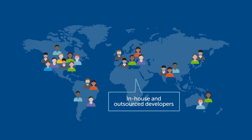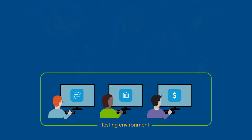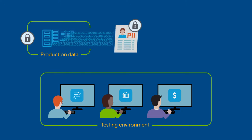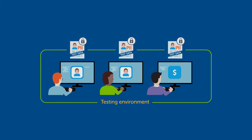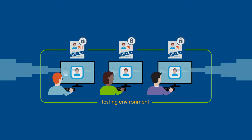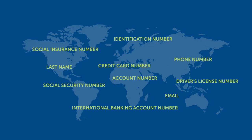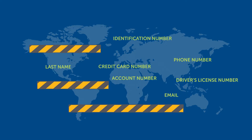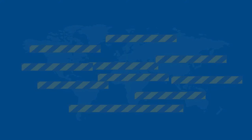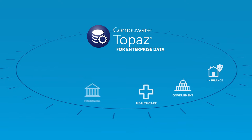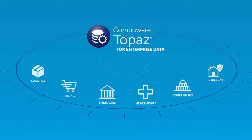When you have hundreds or thousands of developers testing applications, they need fast and efficient access to test data. But when production data is copied into less secure test environments, personally identifiable information is accessible by all your developers, in-house or outsourced. Because of this increased vulnerability, the use of real data in the test environment is covered by strict privacy laws worldwide, and sensitive information must be protected.